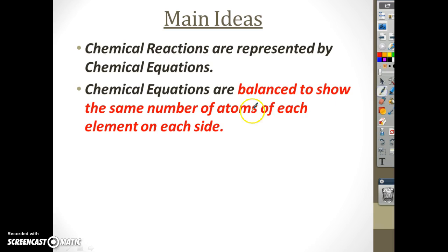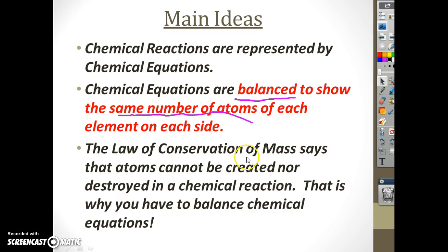Chemical equations are balanced to show the same number of atoms of the element on each side. The reason this occurs is because the law of conservation of mass says that atoms can't be created or destroyed in a chemical reaction. That's why you have to balance them. If I put in one oxygen, I will get out one oxygen. If I put in 20 oxygens, I'll get out 20.